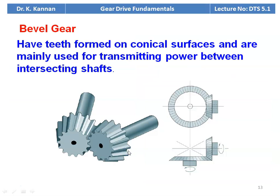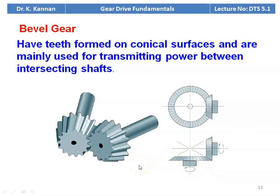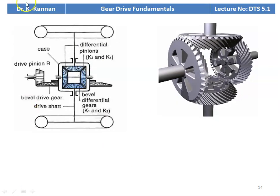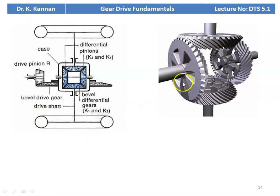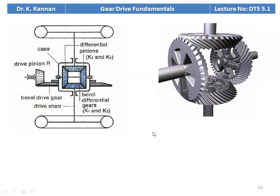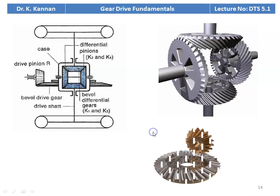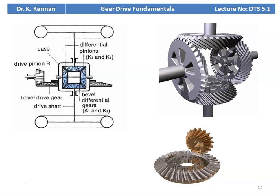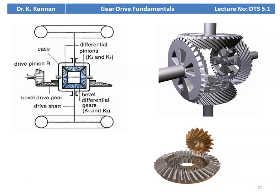Bevel gears have teeth formed on conical surfaces and are mainly used for transmitting power between intersecting shafts. The pinion is the smaller wheel and the gear is the larger wheel. When you extend the axis of the shafts, they meet perpendicularly — these are called straight bevel gears. This animation shows the differential gear drive working, which is used in automobiles, and how the bevel gear transmits power between the pinion and the gear.